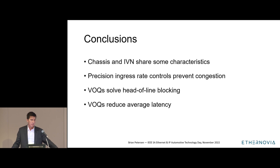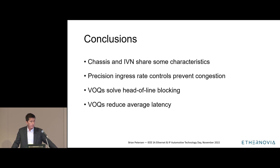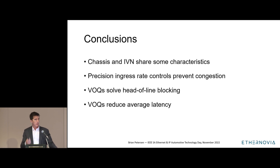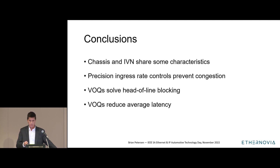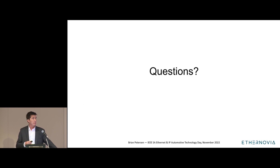In conclusion, there are common characteristics between chassis-based systems and in-vehicle networks from which we can draw lessons. If we have precision shapers on the ingress sources of all traffic, we can prevent congestion in the network. VOQs solve the head-of-line blocking problem and minimize bursts, reducing average latency and congestion. The VOQ architecture has the potential to solve congestion-related packet drops in our networks.